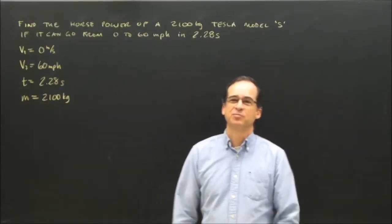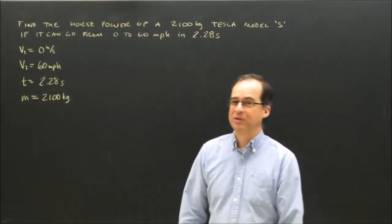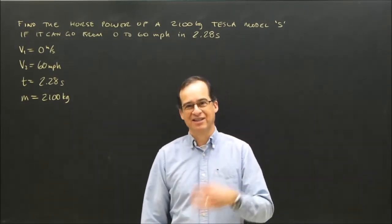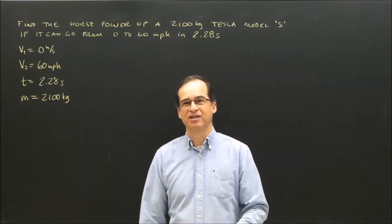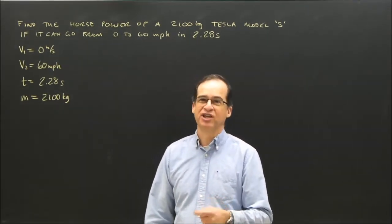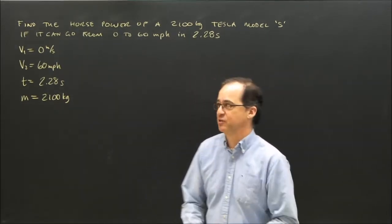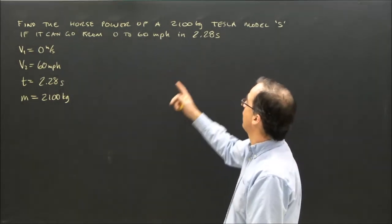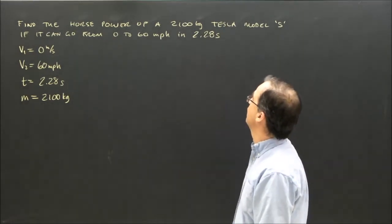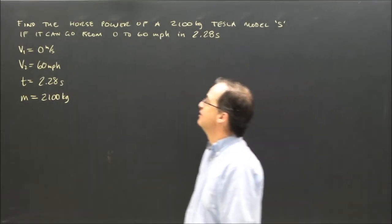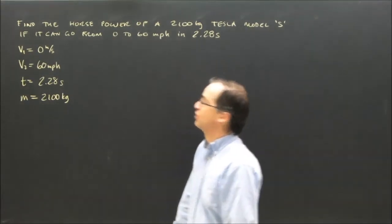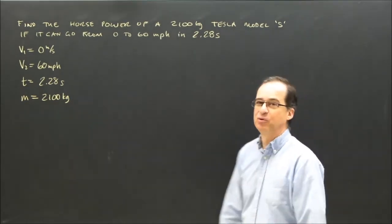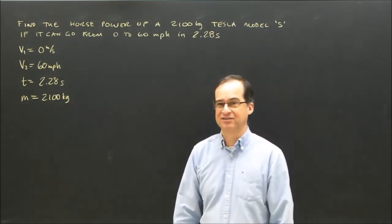We're going to start with a simple power problem. The formula for power is energy divided by time, and we're going to use that to do something reasonable. Find the horsepower of a 2100 kilogram Tesla Model S if it can go from 0 to 60 miles per hour in 2.28 seconds.